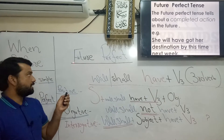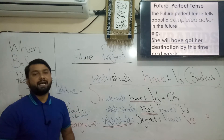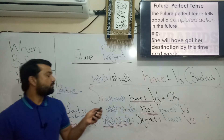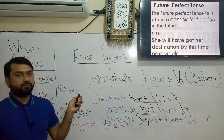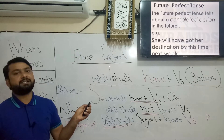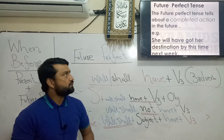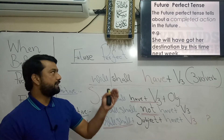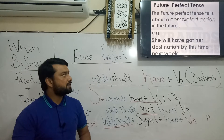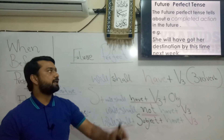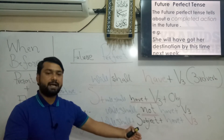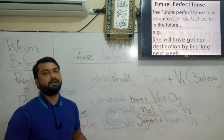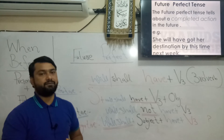Today we are going to learn about future perfect tense. As you know, we have already learned present perfect and past perfect, and now we are going to learn future perfect tense. The future perfect tense tells about a completed action in the future. Look at the example: 'She will have reached her destination by this time next week.' Signal words and phrases include: by next month, next week, in two months, in three months.